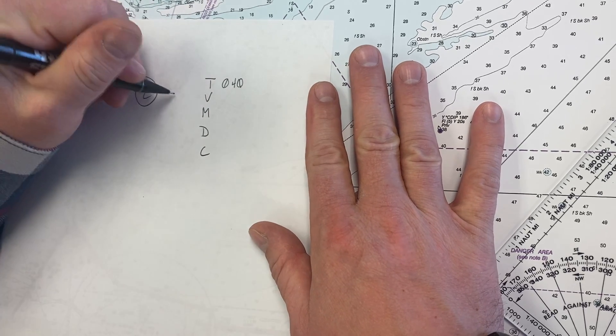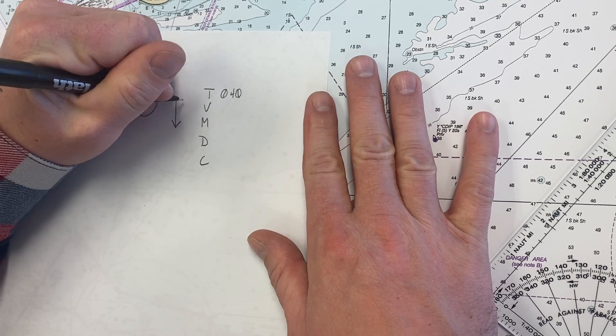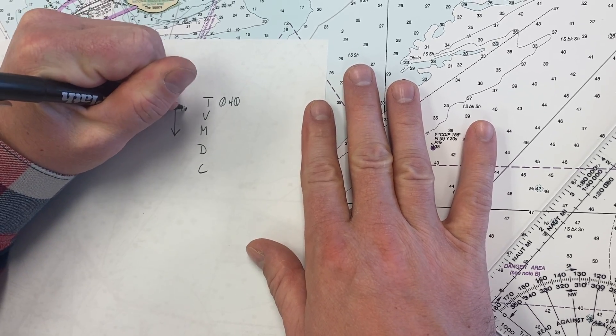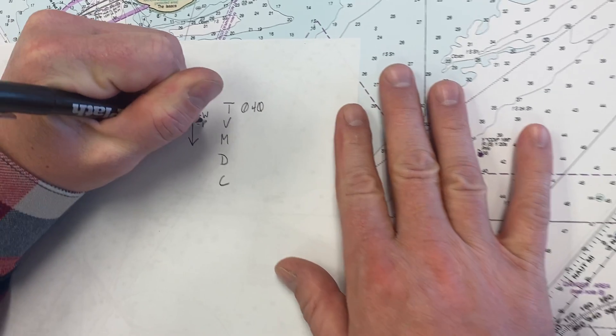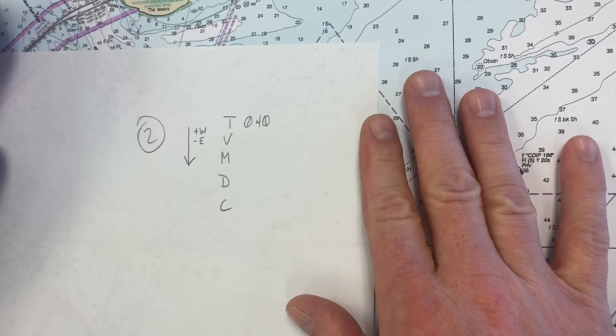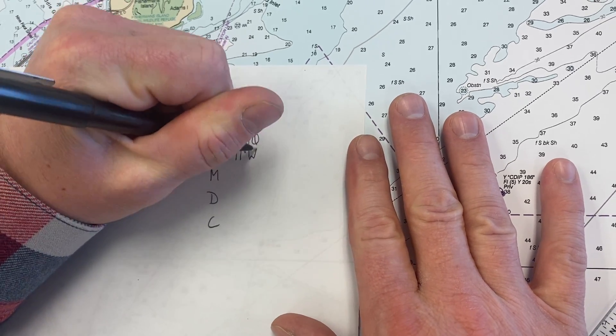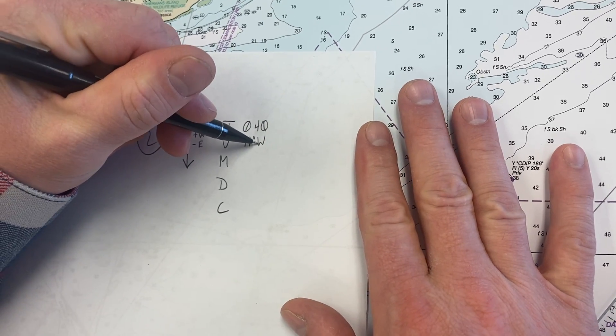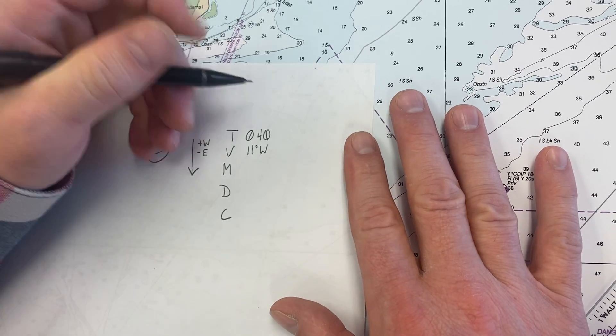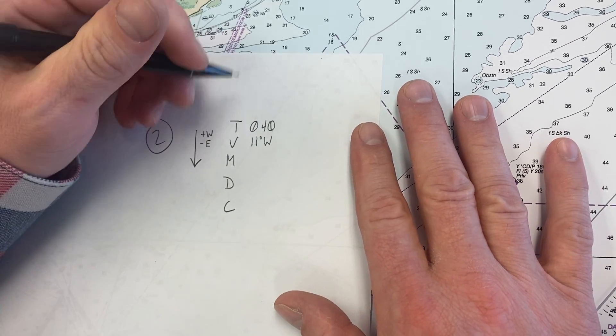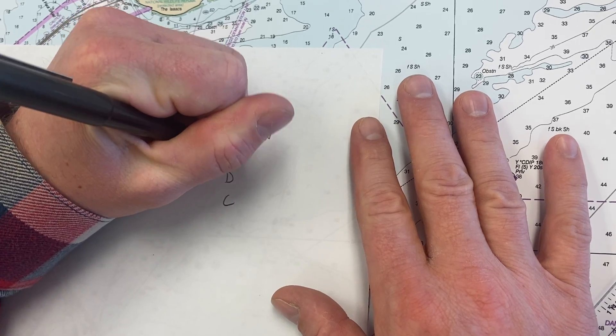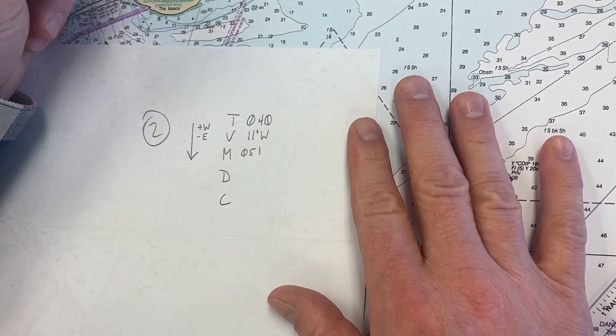Now remember going down this table we're always going to add anything west and subtract anything easterly. Now our variation is 11 degrees west and I make a point to make sure to add the W or the E to always make sure to add or subtract correctly. So 11 added to 40 is 0, 5, 1 degrees magnetic.